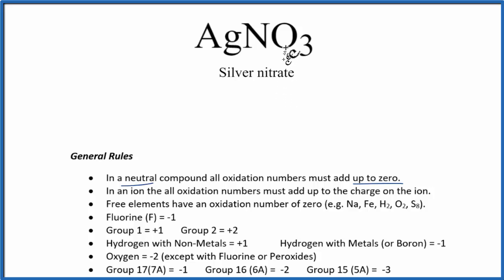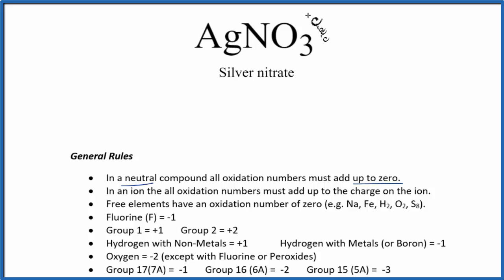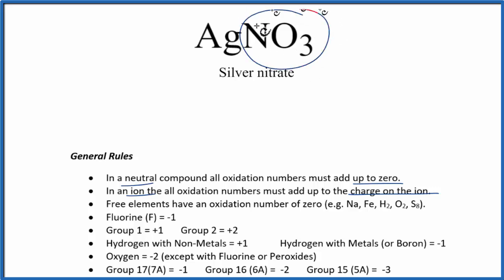Next, when I look at this, I don't know what silver is — it's not on my list. It's usually plus one, but I want to check. Nitrogen is also not on my list. But when I have ions, like the nitrate ion here, the charge on the ion equals its oxidation number. So the oxidation numbers for an ion add up to its charge. I can look up nitrate on a table of common polyatomic ions, or just memorize that the whole nitrate is minus one — that's its oxidation number.